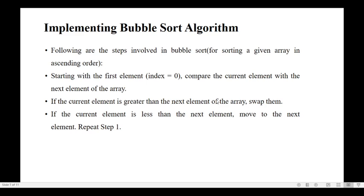The steps involved in bubble sort for sorting in ascending order: starting with the first element at index zero, compare the current element with the next element. If the current element is greater than the next element, swap them. If the current element is less than the next element, move on to the next element and repeat from step one.